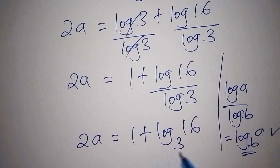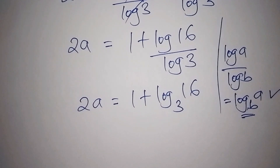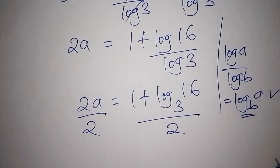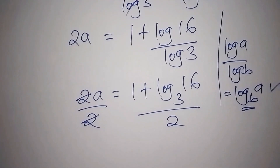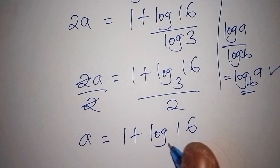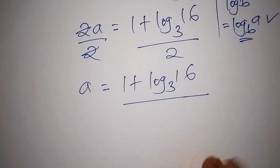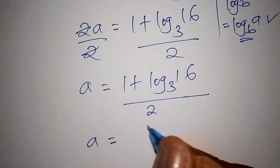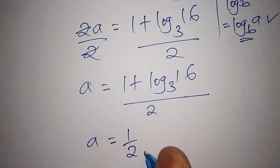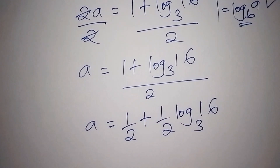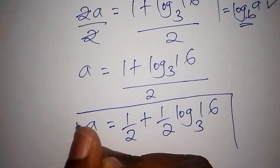To isolate a, we divide both sides by 2. So a equals (1 plus log base 3 of 16) all over 2. Splitting this, we get a equals one-half plus one-half times log base 3 of 16. This is our final value for a.